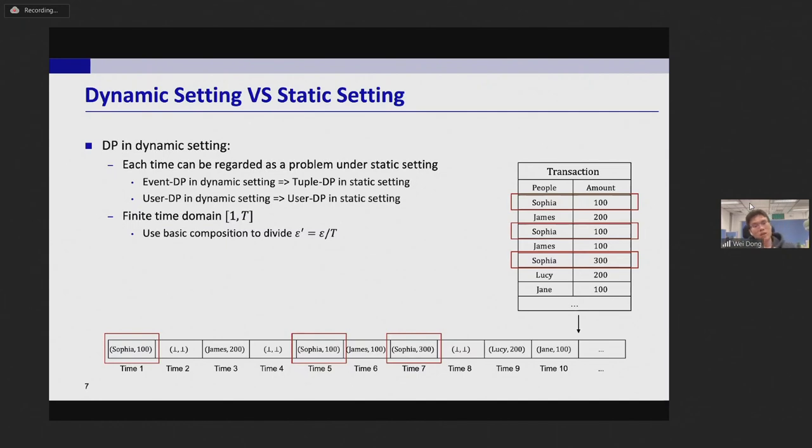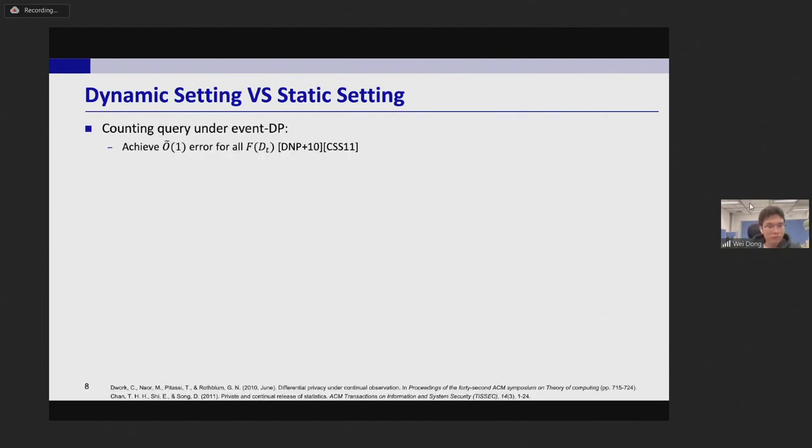Therefore for the query answering in the dynamic setting with finite time domain, one simple idea is to use basic composition to divide the privacy budget and then answer each query independently. However this idea cannot cover infinite time domain and has a very large error. For counting query under tuple-DP this achieves the error of big O T where T is the time domain size. But here our target is to achieve the same error as the static setting, which I mean constant error.